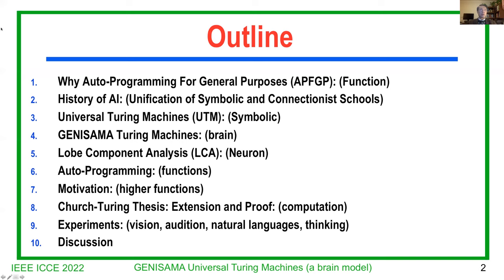symbolic and connectionist. Number three, I will talk about Universal Tooling Machines — UTM for short. It is a symbolic school, but it's very useful for us to understand the theory because we are familiar with symbols, while vectors or numerical numbers are harder to understand. So we need to start with the symbolic model. Then, number four, we talk about brain functions modeled as Genesema Tooling Machines. Genesema is an acronym for eight properties. Genesema Tooling Machines — then we go into the detail of each neuron, what each neuron does. The model is a biologically informed model: model component analysis, LCA for short.